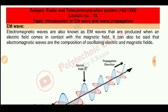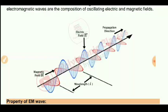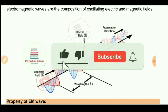Electromagnetic waves — we call them EM waves in short — are a combination of oscillating electric field and magnetic field. These two fields are perpendicular to each other, and their resultant generates another wave, which is called the electromagnetic wave.